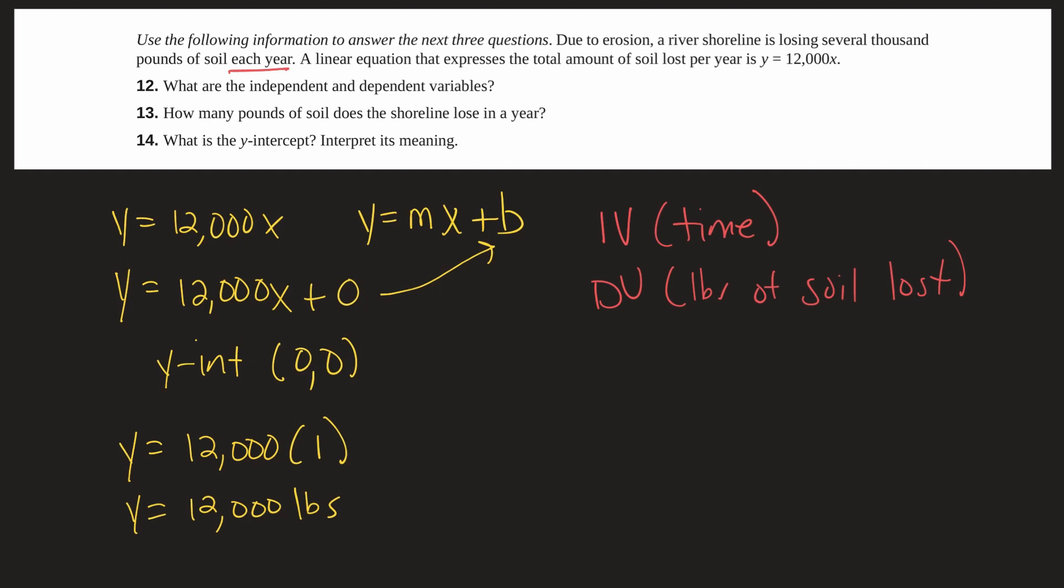And then finally it asks what is the y intercept and interpret its meaning. Well we know the y intercept here is zero zero. And it starts there because we're starting at time zero right now. In these types of problems where the intercept is zero we're starting at the current time starting from zero and then going forward.